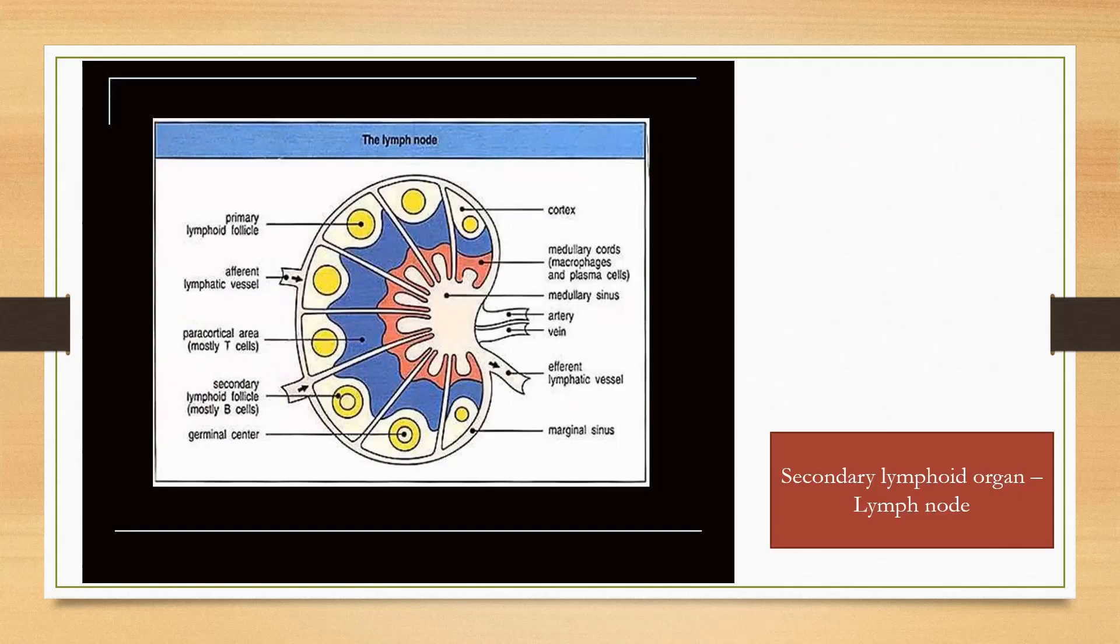The lymph node is a well-organized secondary lymphoid organ. It is present near the joints and the regions where arms and legs join the body. It is bean-shaped and helps to remove antigen present in the lymph.